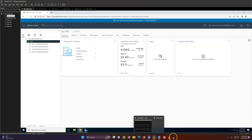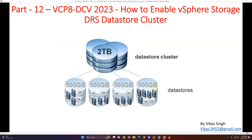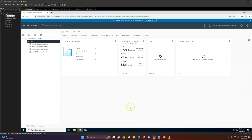This is the same infrastructure we used in the last video. The first machine is our domain controller or DNS server, the second is our Windows iSCSI server, and we have two ESXi hosts with one vCenter server running on ESXi host one.